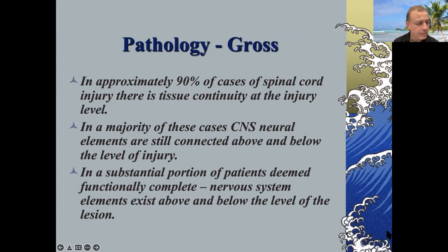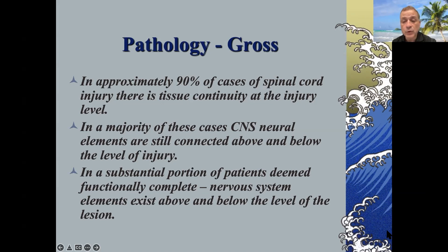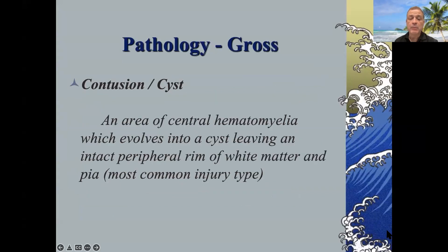When you look at the spinal cord grossly after injury, interestingly, in most cases the spinal cord is in continuity in some way — either attached by axonal remnants, astrocytic remnants, scar tissue, or intact axons that are simply non-functional, possibly demyelinated. So even in someone who is so-called complete, there may still be neurological elements bridging the area of injury, which is an important point in terms of identifying possible treatments.